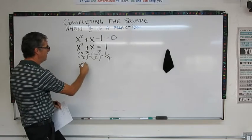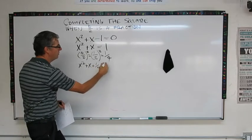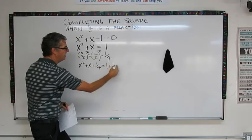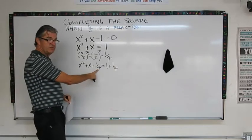x squared plus x plus 1 fourth equals 1 plus 1 fourth. I just added my new constant, my b over 2 squared, to both sides.